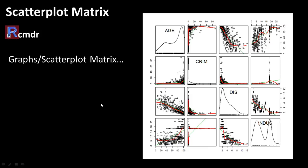R Commander also has the concept of a scatter plot matrix. If you select Graphs > Scatter Plot Matrix, you can select several variables and R will then give you a matrix of scatter plots.